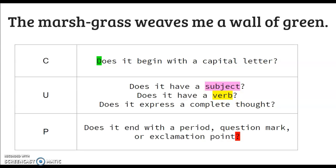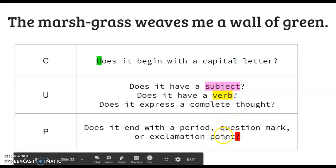So let's use the CUP method by highlighting the capital letter with green for C, the subject with purple, the verb with yellow, and the end punctuation in red for P.